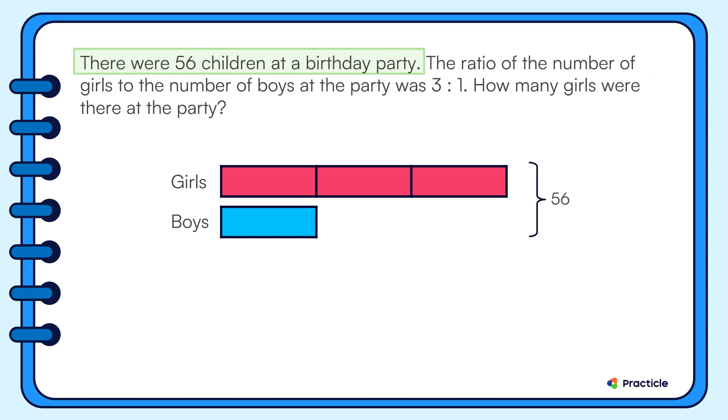Now let's read the question and see what we need to solve. How many girls were there at the party? To find how many girls there were, let's see what we can tell from our model.